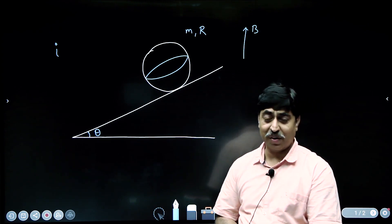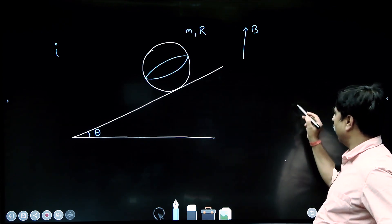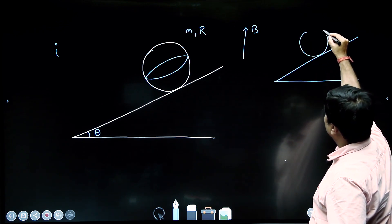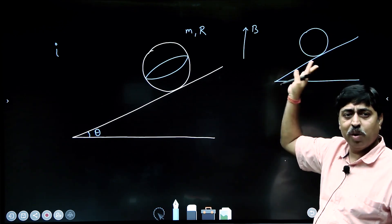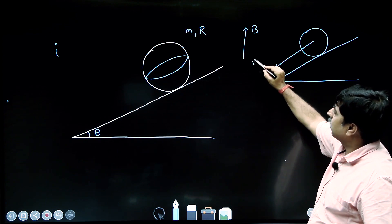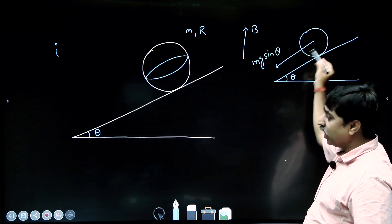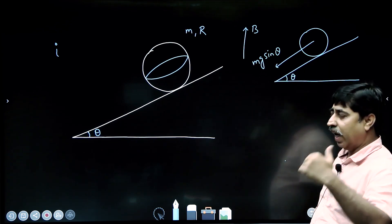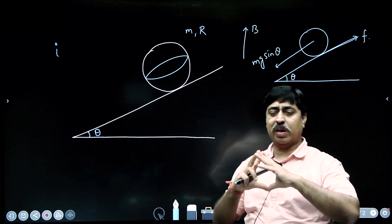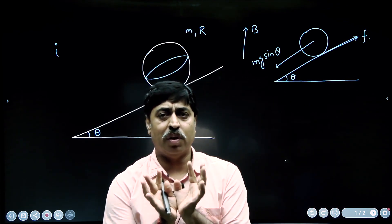Please pause the video and give it a try. Forgetting about the current and magnetic field for a moment — this sphere can never remain in equilibrium on this inclined plane on its own. There is a component of weight, mg sin theta, which will try to move this sphere. If we think the friction force equals mg sin theta, the net force on the ball is zero.